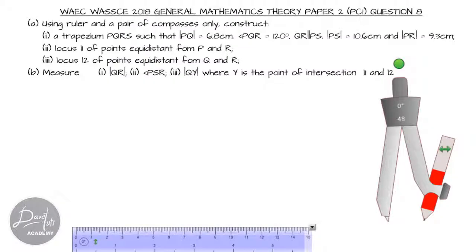We're instructed to use a ruler and pair of compasses to construct trapezium PQRS such that PQ is 6.8 centimeters, angle PQR is 120 degrees, lines QR and PS are parallel to one another, line PS is 10.6 centimeters, and PR is 9.3 centimeters.